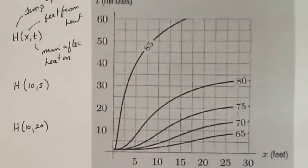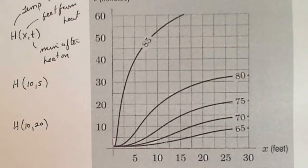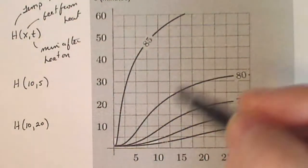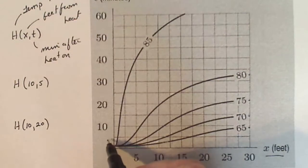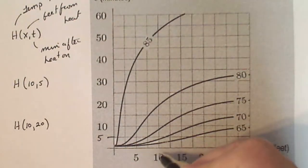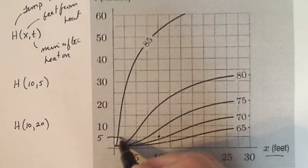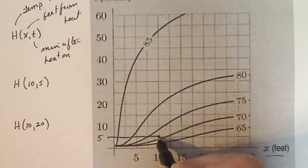So how do I use this contour map? I need to find the ordered pair 10 comma five on the picture. So 10 feet, five minutes. So it looks like 10 feet, five minutes is about right there.